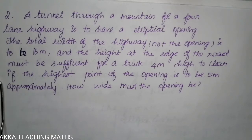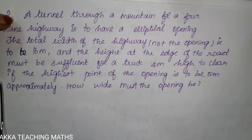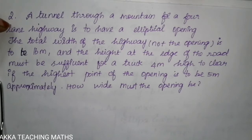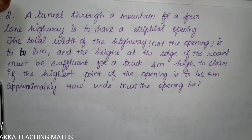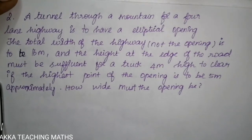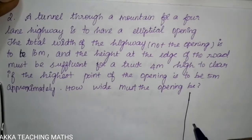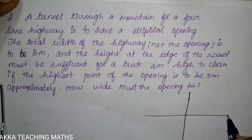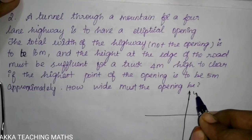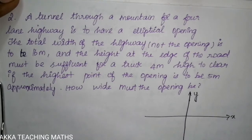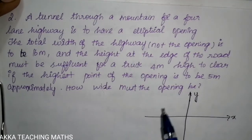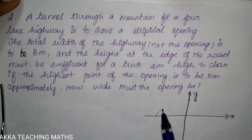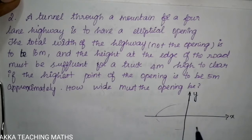So let's talk about what I want to tell you. A tunnel through a mountain for a four-lane highway is to have an elliptical opening. Let's set up the x-axis and y-axis for the elliptical shape.